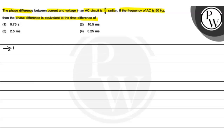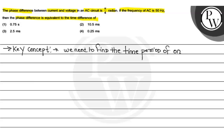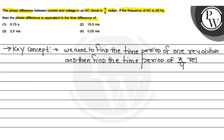To solve this question, the key concept you have to use is: we need to find the time period of one revolution, and then find the time period of π/4 revolution.